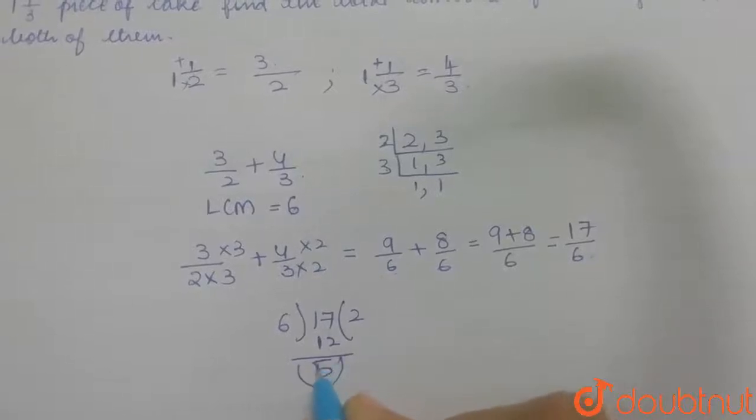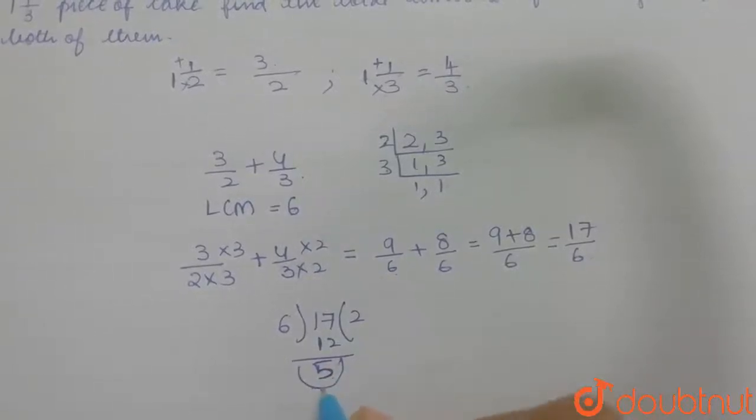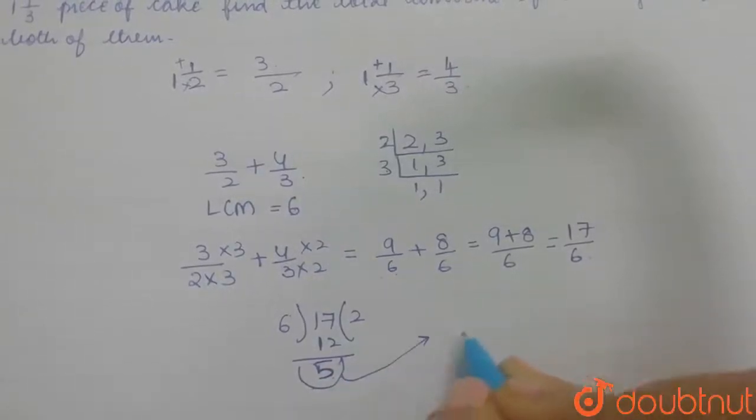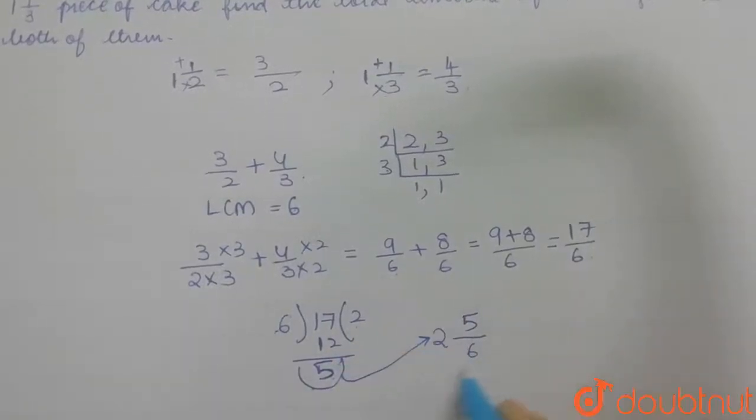The remainder 5 becomes the numerator, 6 goes to the denominator, and 2 comes to the side as the whole number.